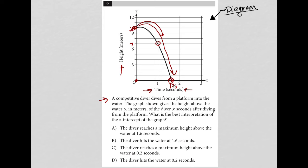So choice A says the diver reaches a maximum height above the water at 1.6 seconds. That's definitely not true. Choice B, the diver hits the water at 1.6. Okay, so I used 1.7 for my guess, but they're obviously telling us that it's really 1.6. So the diver hits the water at 1.6. I like that a lot, because that's what our y-value equaling zero would mean here. The height is zero.